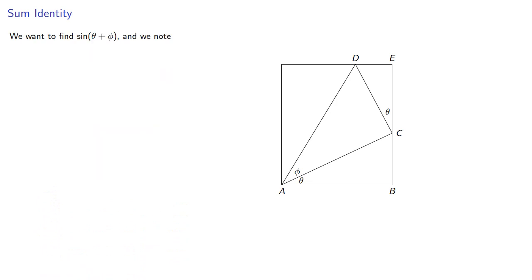So, we want to find the sine of theta plus phi, and we know that the sine of theta plus phi is opposite. We'll draw that perpendicular and call it DF over hypotenuse AD, so let's try to find DF.